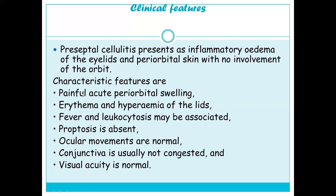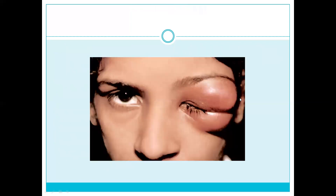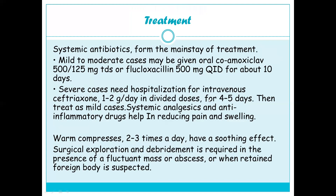You will notice painful acute periorbital swelling with erythema and hyperemia of the lids; the rest are mostly normal. As seen in this image, the eyelids are swollen and the swelling is associated with pain. Systemic antibiotics form the mainstay of treatment.